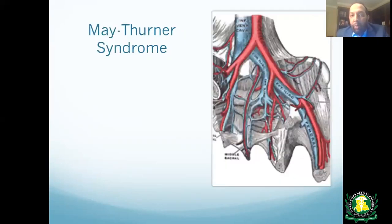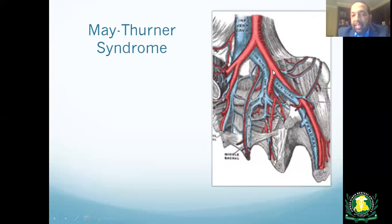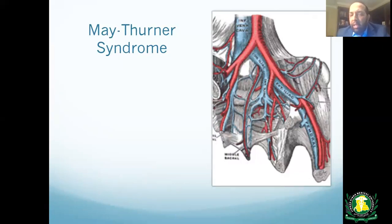This diagram explains May-Thurner syndrome clearly: the right common iliac artery crosses over the left common iliac vein, causing compression right at that area. Another compression point is where the right internal iliac artery crosses over the left external iliac artery. This is a normal anatomical variation — why some people develop clots and others don't is unclear. However, any unexplained unilateral left leg swelling should have May-Thurner syndrome on the differential.